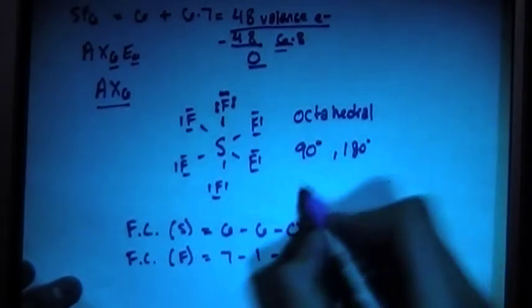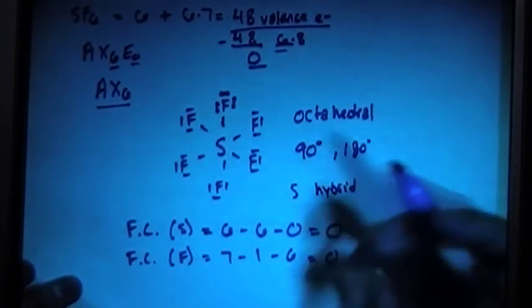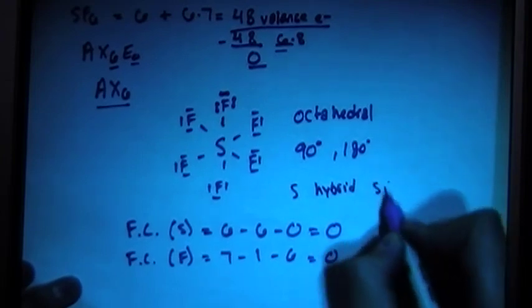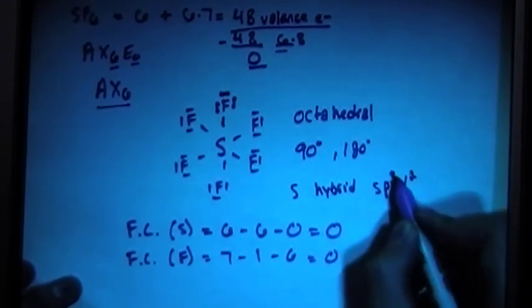And let's see, so the hybridization of S hybrid orbitals are going to have, there's 6 things attached, so you have to have S, P3, D2, so you have 1, 2, 3, 4, 5, 6.